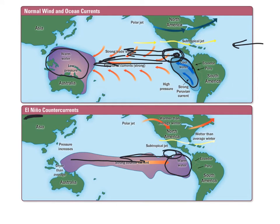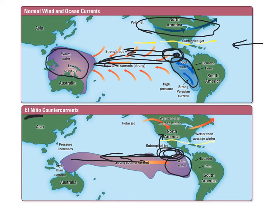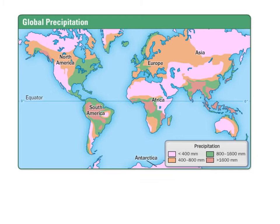During El Niño, so much warm water builds up that it flows back, causing a counter current. This means we stay warm here, so we don't get the strong winds and currents moving everything out. The moisture and storms that normally go one way instead tend to go northward, and we get a lot more precipitation. Normal conditions bring a colder winter; El Niño brings a slightly warmer winter but with a lot more precipitation — good for drought-stricken areas in the southwest.